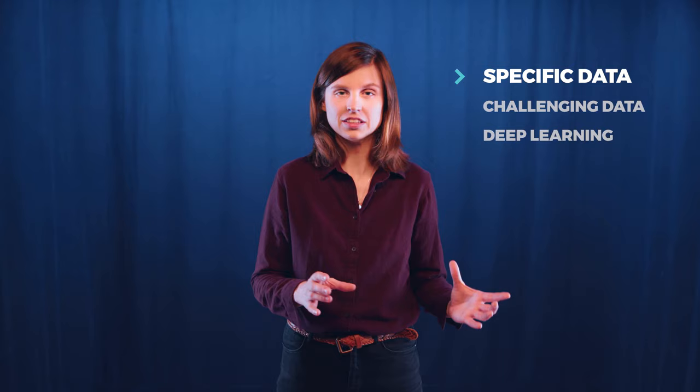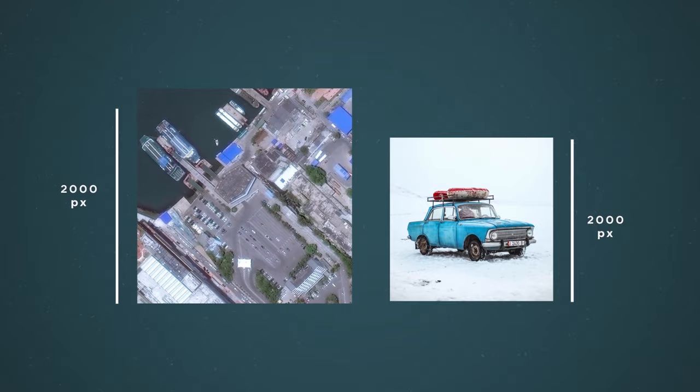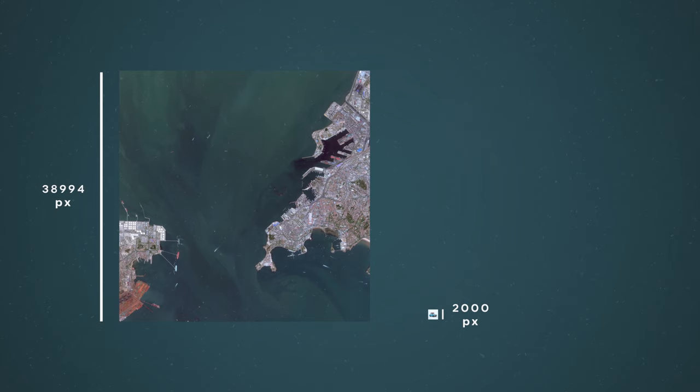Let's start with why satellite images are specific data. First, if you compare a photography and a satellite image, you will see that usually a satellite image has much more pixels than a classical photography — and that, considering that a photography can already have thousands of pixels.